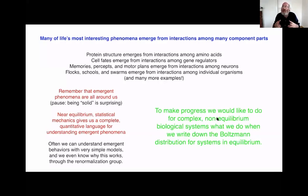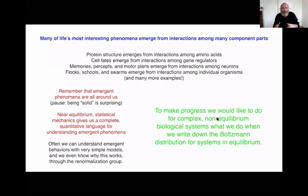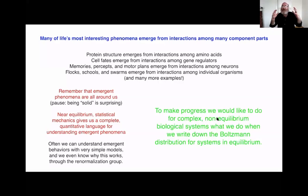Similarly, if you think about what happens to a cell in a developing embryo - why is that cell doing its particular job? What's different about a cell in your brain and a cell in your liver? The fate and state of the cell emerges from interactions among a large number of elements turning different genes on and off. They're turning each other on and off through this complicated regulatory network, and out of that emerges the state of the cell.